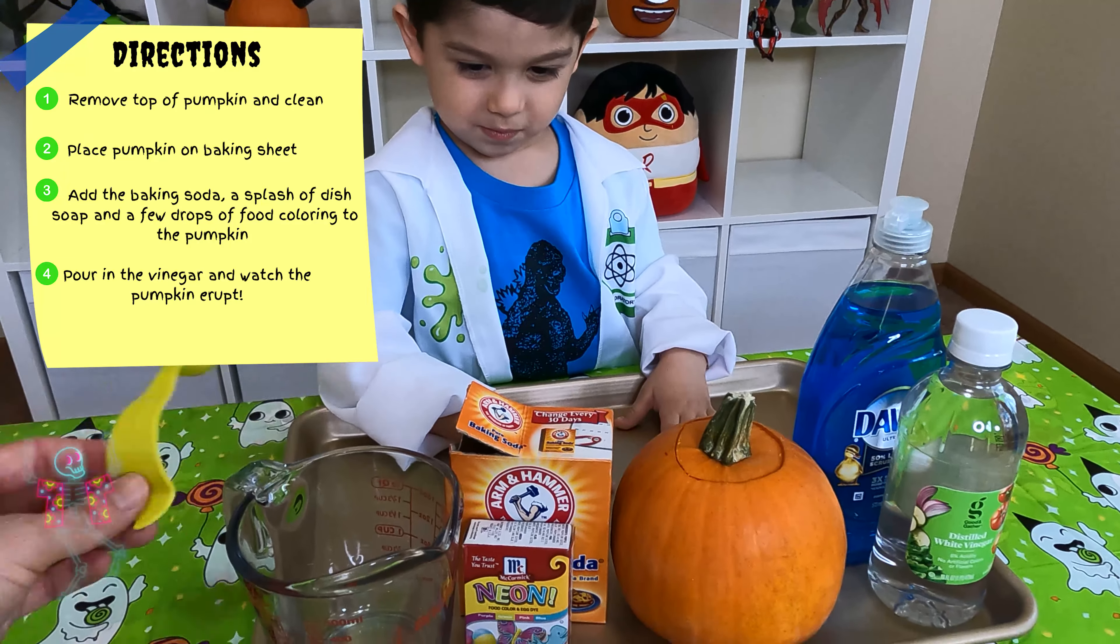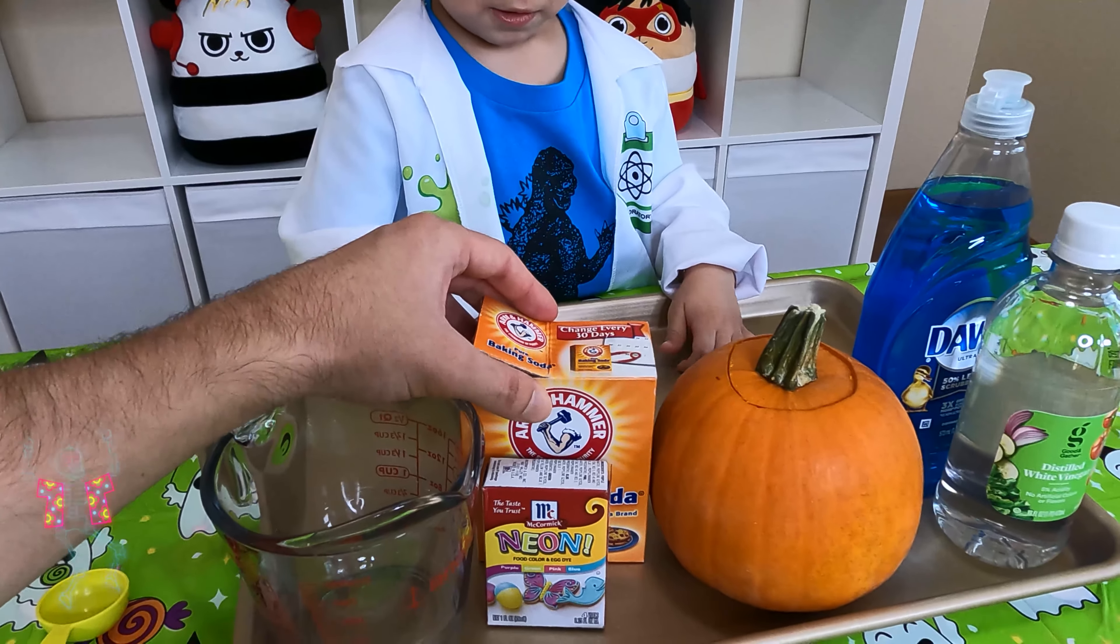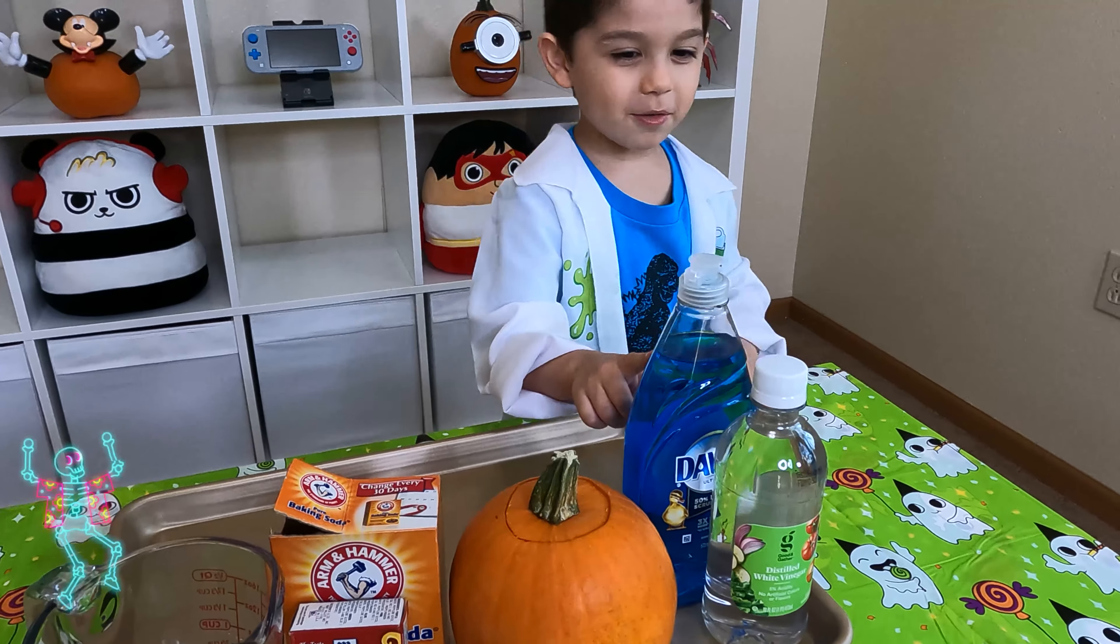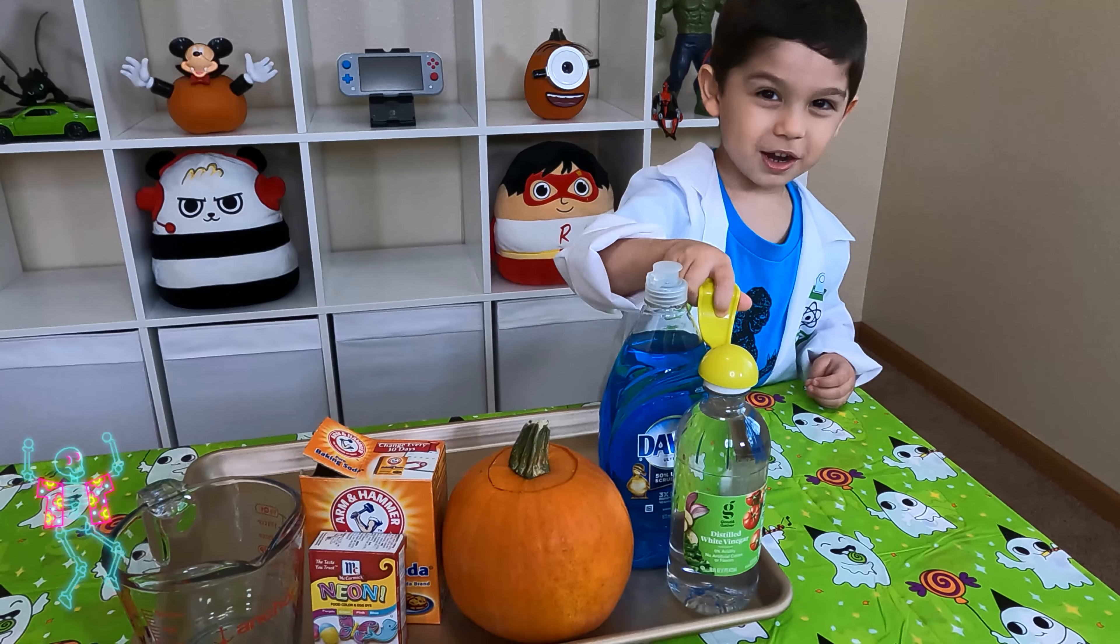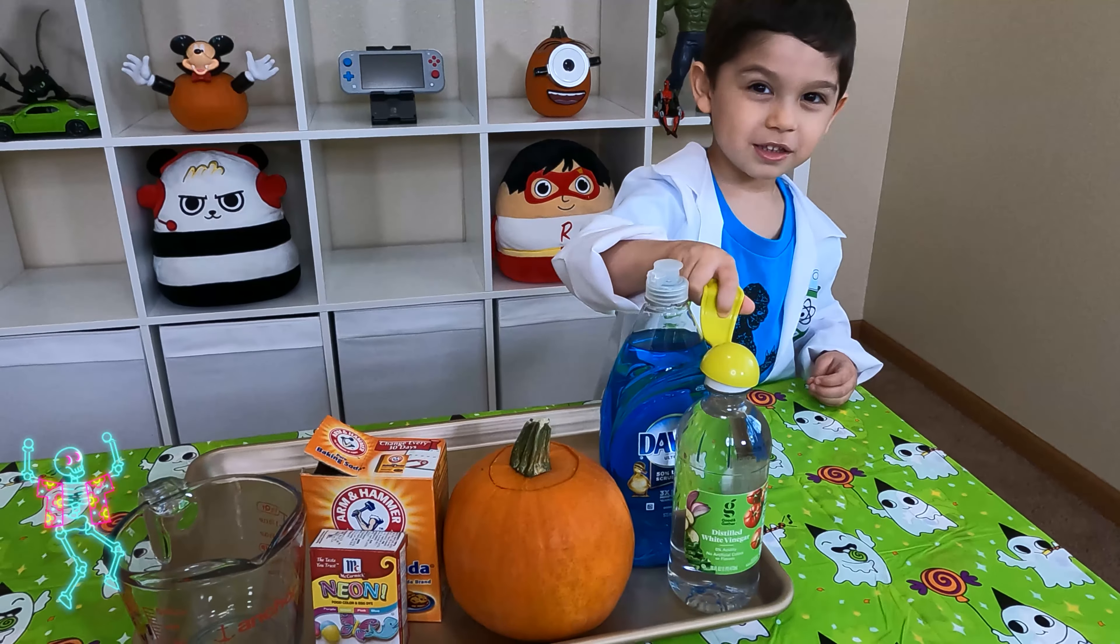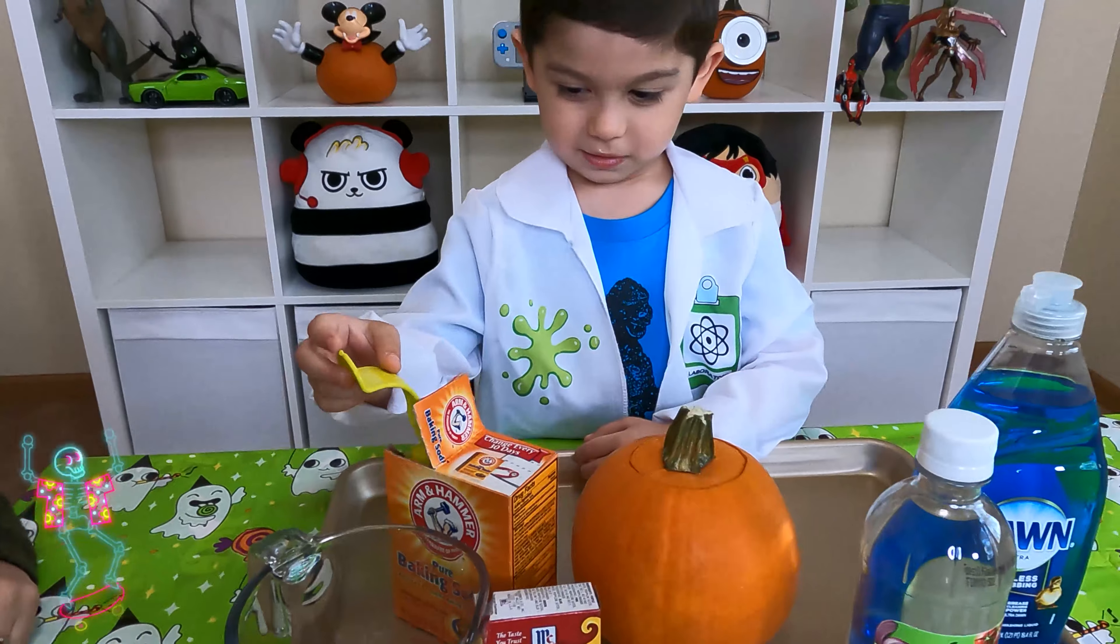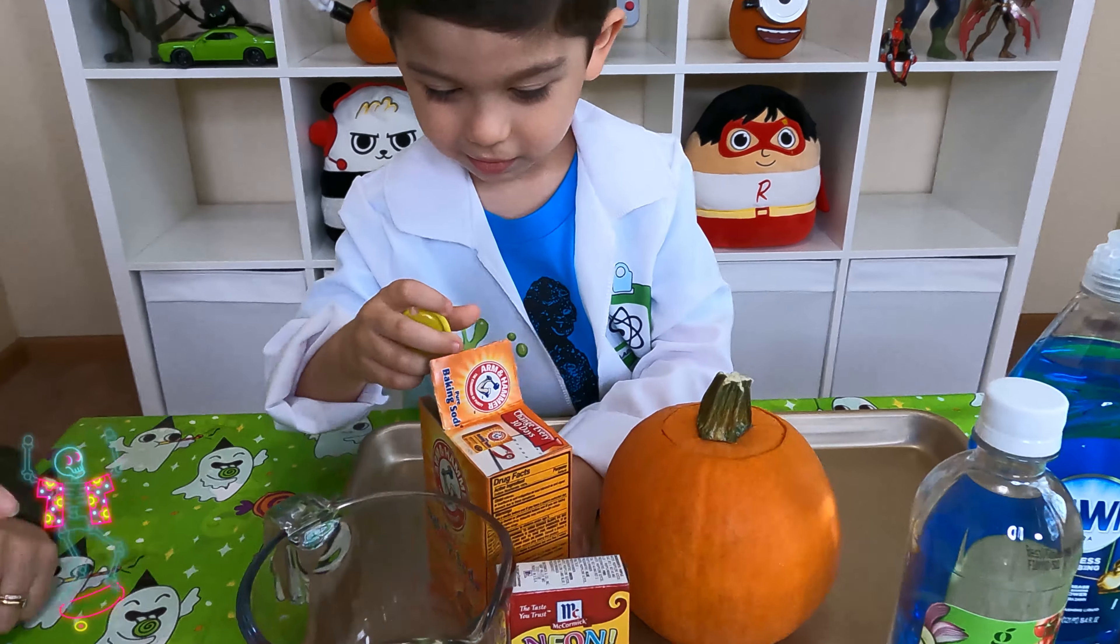One tablespoon, baking soda. What else? Pumpkin, and soap and oil. Do you want to say? Vinegar. You ready, scientist Eason?